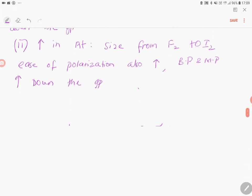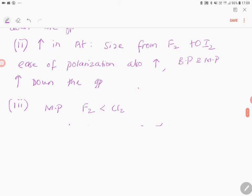Therefore, if we need to write the increasing order of melting point, it is fluorine less than chlorine less than bromine less than iodine for boiling point.